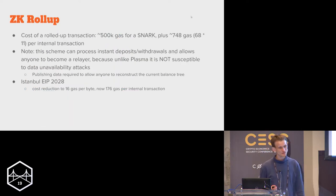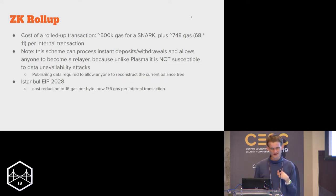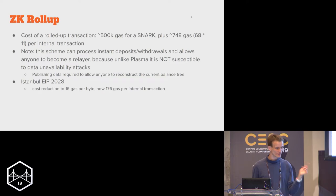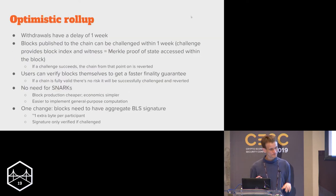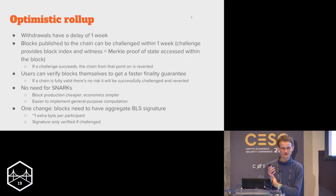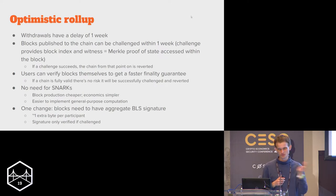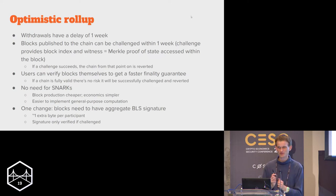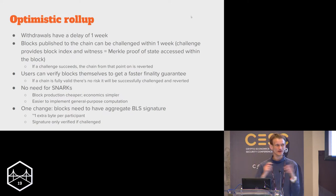ZK rollups put storage off-chain, and what they leave on-chain is a small amount of data — something becoming cheaper in the next Ethereum hard fork, where the gas cost of data is going down from 68 to 16. So ZK rollups do the cheap stuff on-chain (data) and the expensive stuff off-chain (storing state, computation). With rollups you can go down to about 748 gas per transaction theoretically now, and after Istanbul much lower. Optimistic rollup is different from ZK rollup but does the same thing.